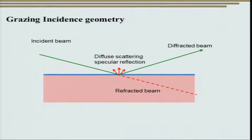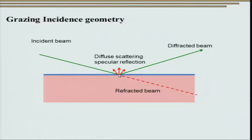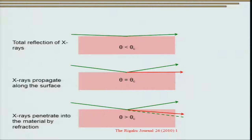Let us understand how exactly it works in case of grazing incidence diffraction by looking at the grazing incidence geometry. Here I have shown a thin film deposited over a substrate. The incident angle αi is exaggerated so you can see how the incident beam gets diffracted from the substrate. At a very small angle, we do get diffuse scattering due to specular reflection going mostly perpendicular to the substrate plane, and at the same time we also have a refracted beam. Depending on the incident angle, we can have various situations.